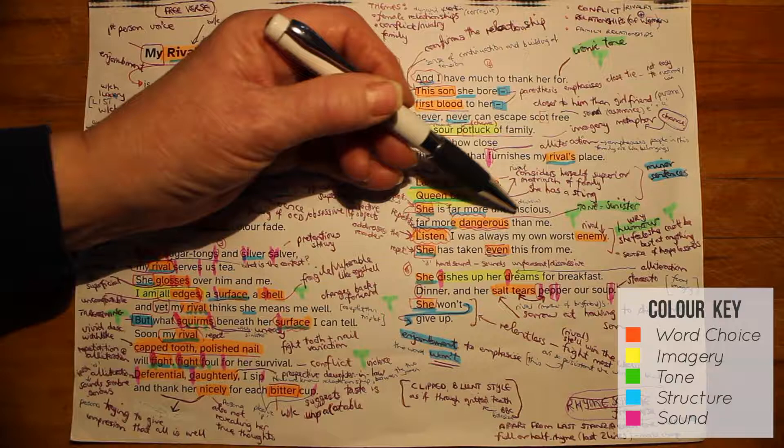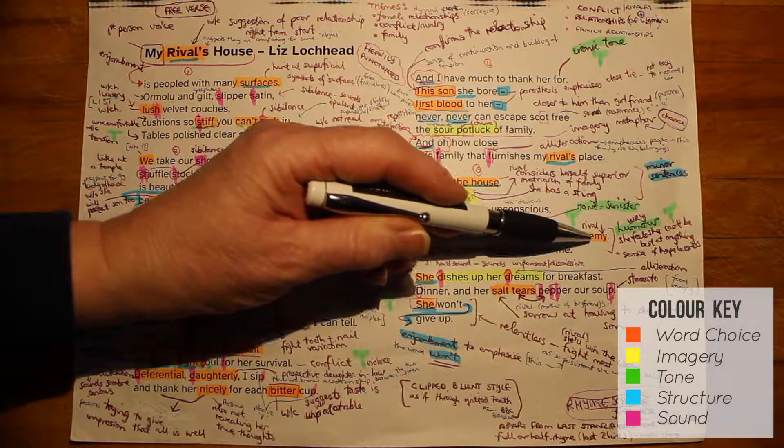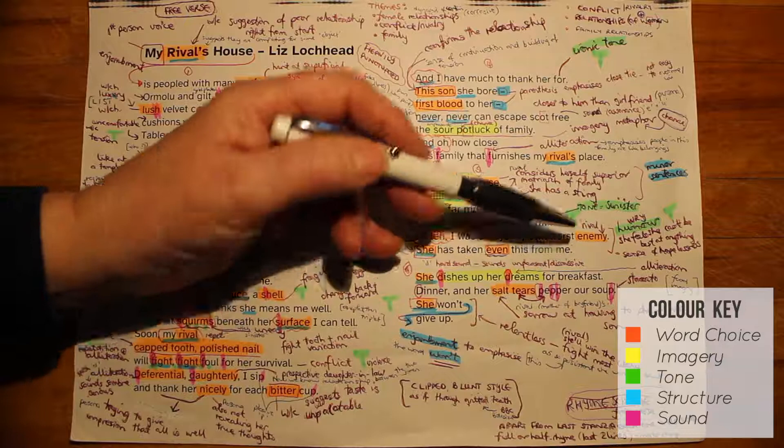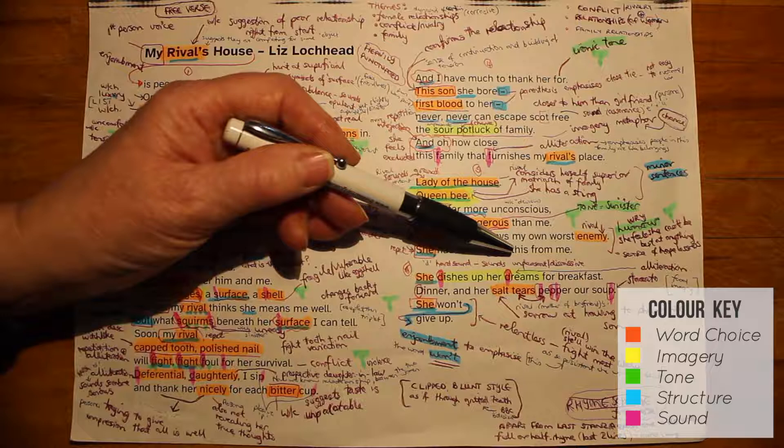Unconscious suggests it will be easy for the hostess — she's devious and does it without even trying. Dangerous is quite sinister. Here the persona addresses the reader directly: 'Listen,' she says, 'I was always my own worst enemy' — and this is a step up from rival; enemy is stronger. She, that is the hostess, has taken even this from the persona. It's a very wry, humorous statement, but it shows how intimidated the woman is feeling — she can't even be her own worst enemy, because the rival is able to beat her at that too. There's a sense of hopelessness developing.